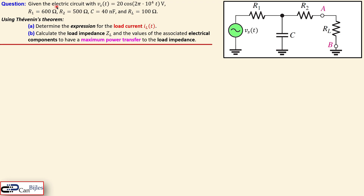We have the following situation. We have a given electric circuit with a voltage source Vs given by 20 cosine(2π × 10⁴ t) volts. The frequency is 10 kilohertz and it has an amplitude of 20 volts. We have R1, R2, C, and a load resistor — four components and one AC voltage source.